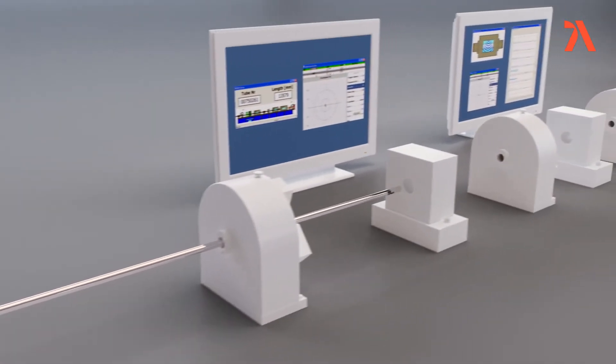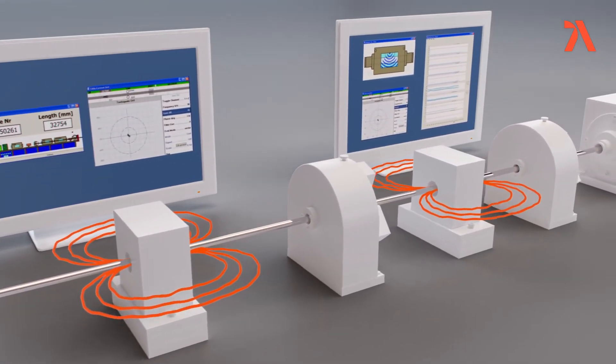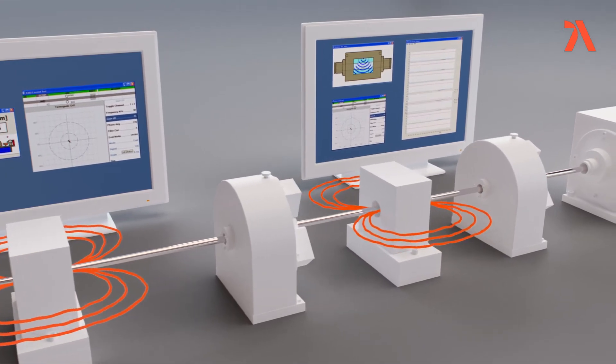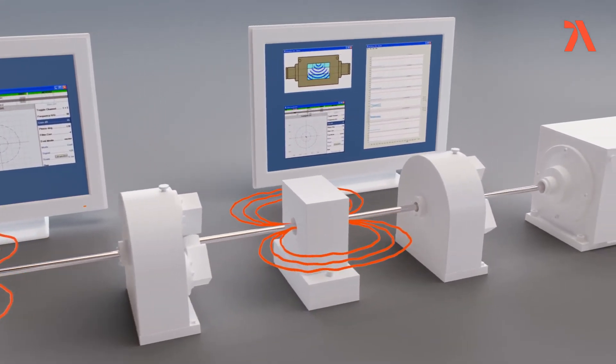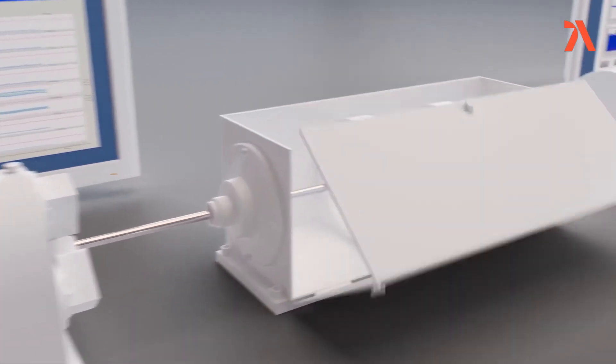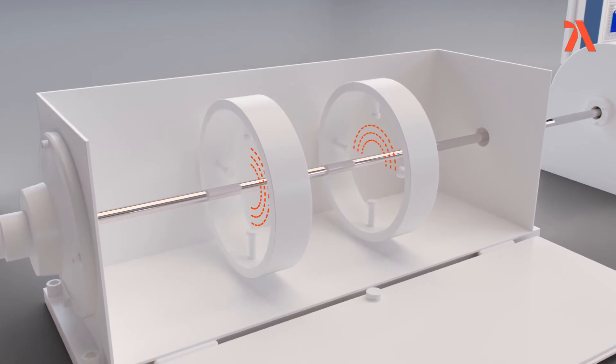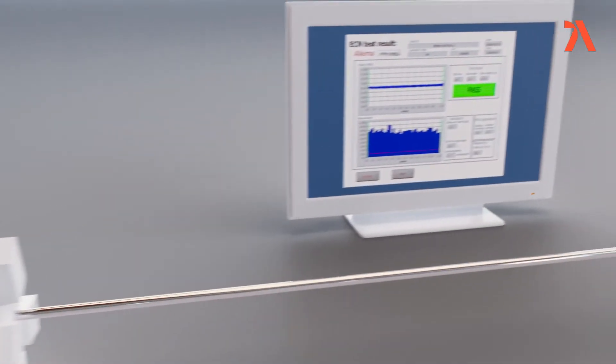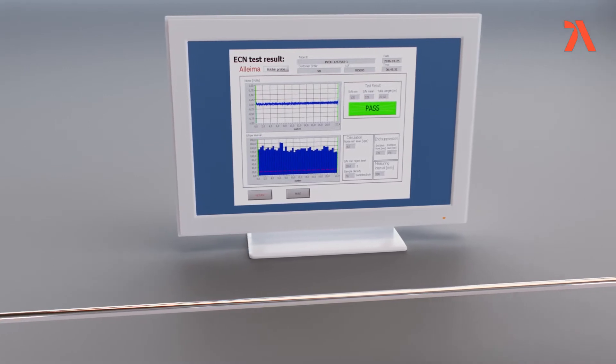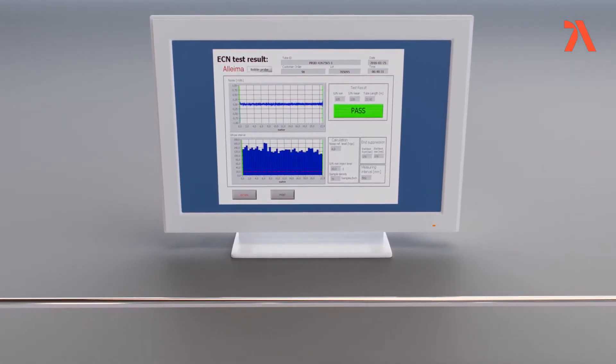Each tube is inspected for defects using ultrasonics and eddy current testing methods set to discover tiny defects that the naked eye can't detect. The diameter and wall thickness of all the tubes are also measured and recorded along their entire length. Alloy identity checks and measurement of eddy current signal to noise ratio is performed on each tube.